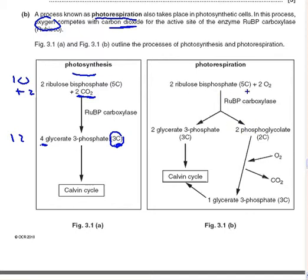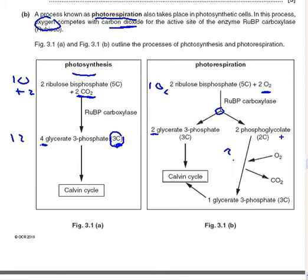In photorespiration, we still have 2 ribulose bisphosphates, but this time we have oxygen instead of carbon dioxide — so only 10 carbons. We can't form 4 glycerate-3-phosphates. Instead, it splits: 2 glycerate-3-phosphates form, and down here we get 2 phosphoglycolate molecules — 4 carbons in total. Another oxygen molecule comes in, removes a carbon, and we end up with just 1 glycerate-3-phosphate from that branch — 3 total instead of 4. That's 3 fewer carbon atoms entering the Calvin cycle.